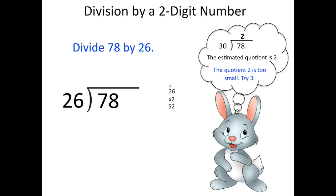So Mr. Bunny is going to give that another try, this time with the number 3. And off to the side, he's going to multiply 26 times 3, and he's going to get 78. When he subtracts, he gets 0, so it goes in exactly 3 times.